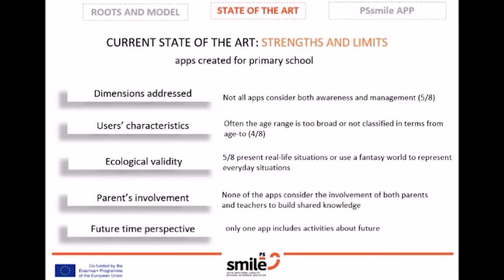A key aspect is the type of task used and their ecological validity. An ecologically valid tool has characteristics of topographical similarity to the skills or behaviors required in the child's natural environment and has value in predicting daily function. Five out of eight apps represent real-life situations. Four out of eight apps have a tips section for parents or teachers. None of the apps include activities in which parents work on their own knowledge and skills, and none consider the involvement of both parents and teachers to build shared strategies.